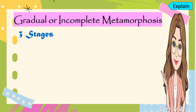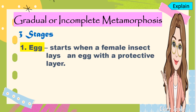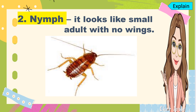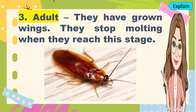Incomplete metamorphosis has three stages. The first one is the egg — it starts when a female insect lays an egg with a protective layer, for example the egg of a cockroach. The second stage is nymph, which looks like a small adult with no wings and molts several times. The third or last stage is the adult — they have grown wings and stop molting when they reach this stage.